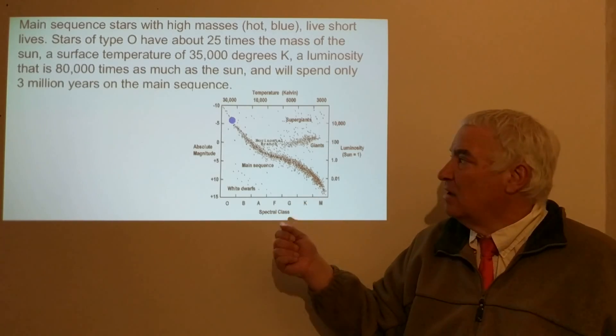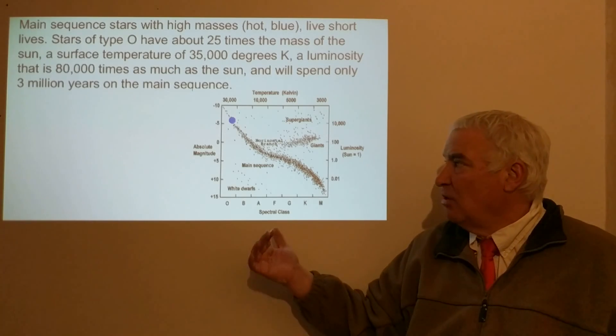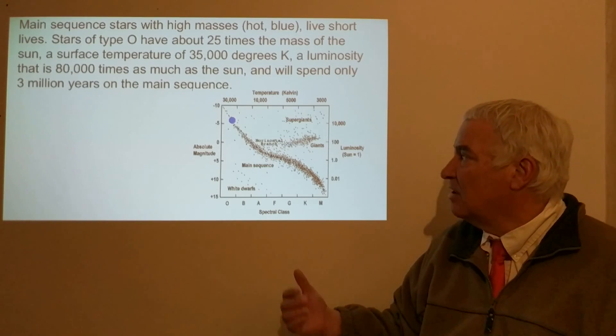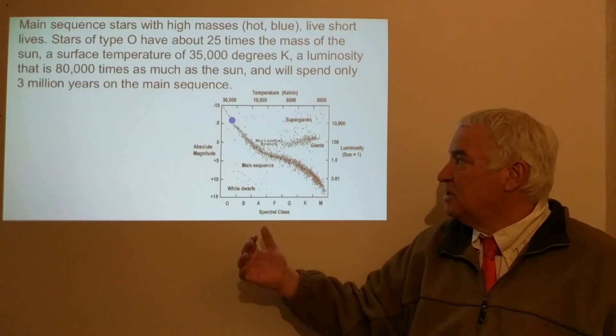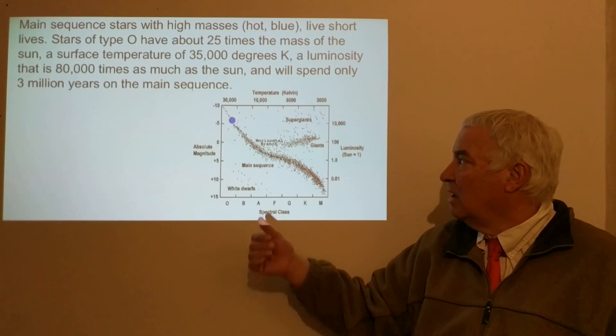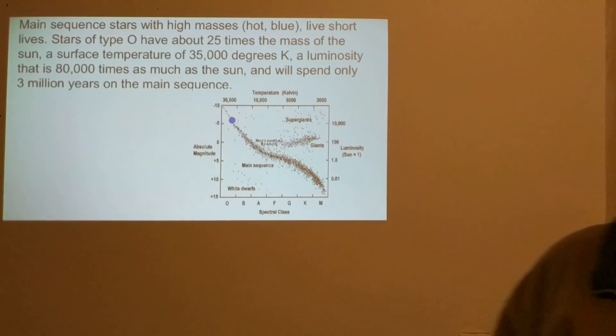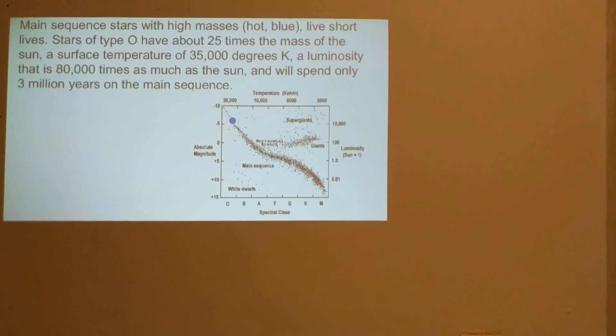Because it takes up to 10 to 100 million years even for a planet to form, so we can imagine that no planets—the planets would still be in the process of formation when this star is no longer a star. And this is because it burns its fuel so very rapidly in order to be 80,000 times as bright as the Sun.